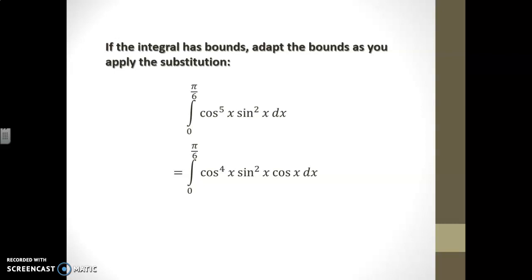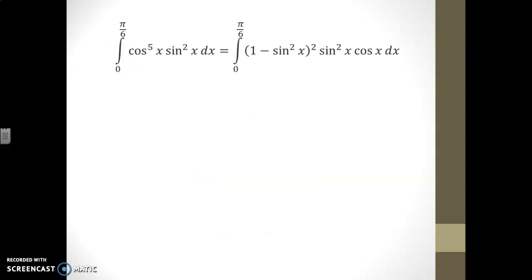Our second step is to replace all cos squares that remain into 1 minus sine squared. Notice that cos squares are hiding inside cos to the power 4, and therefore cos squared will become 1 minus sine squared.